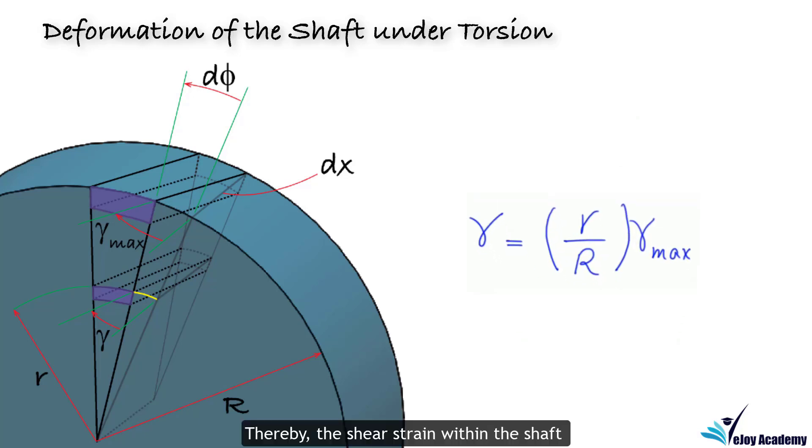Thereby, the shear strain within the shaft linearly varies along any radial line from 0 at its center to maximum gamma at its outer boundary.